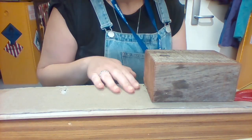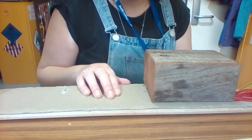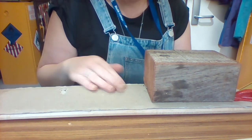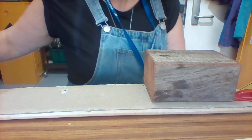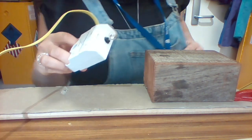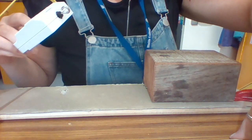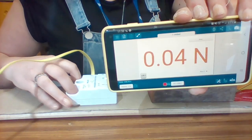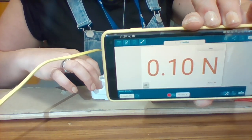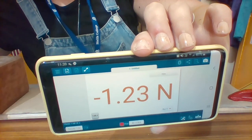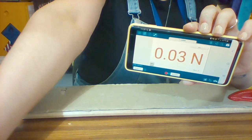Alright, the next surface is just some cardboard. It's stuck on a piece of wood just for ease of use, but it's just cardboard. So you can write down cardboard. Make a hypothesis as to if you think it's going to be higher or lower than the other surfaces. And pulling. Alright.